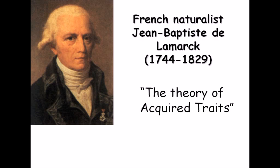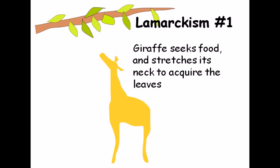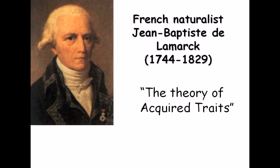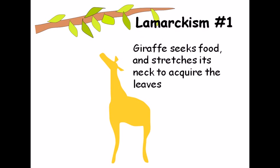The French naturalist Jean-Baptiste Lamarck stated the theory of acquired traits. The theory proposes that a particular organism wants to acquire a particular trait, and in doing so, the organism modifies itself — for example, the giraffe seeks food and stretches its neck to acquire leaves from trees.